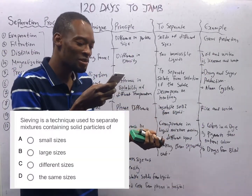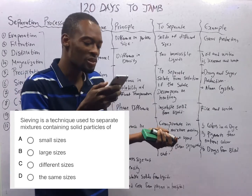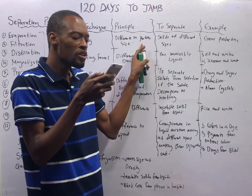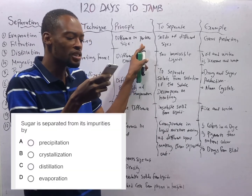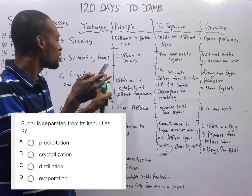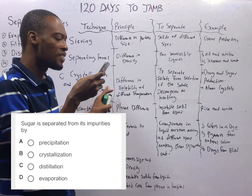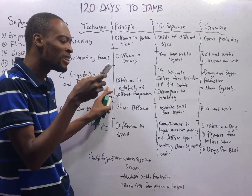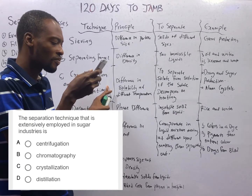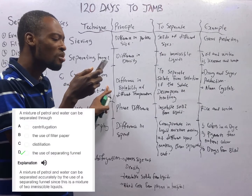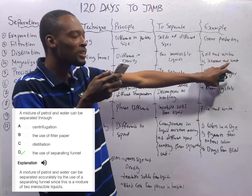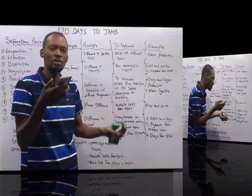Sieving is a separating technique used to separate mixtures containing solid particles of different sizes. Sugar is separated from its impurities by crystallization — when you hear sugar or drugs, when high purity is required, we use crystallization. The separation technique extensively employed in sugar industries is crystallization. A mixture of petrol and water can be separated through a separating funnel, because petrol and water are both liquids but they don't mix.